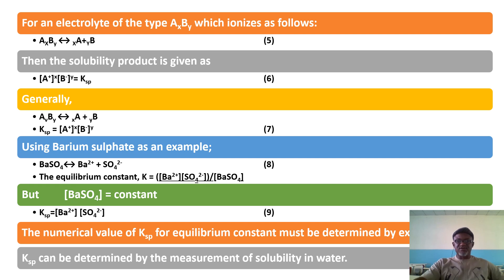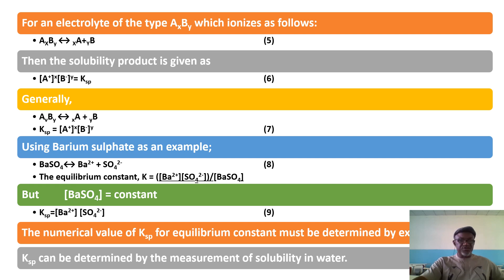For an electrolyte of the form AxBy, bringing in stoichiometry, the solubility product will be equal to [A+]^x × [B−]^y. Generally, Ksp equals the concentrations of the ions each raised to the power of their stoichiometric coefficients. For example, barium sulfate ionizes to give Ba²⁺ and SO₄²−. The equilibrium constant equals [Ba²⁺][SO₄²−] divided by [BaSO₄]. Since the concentration of barium sulfate is constant, Ksp = [Ba²⁺][SO₄²−].